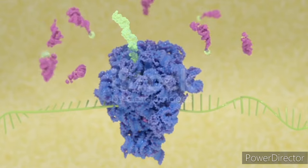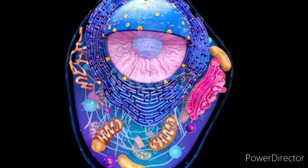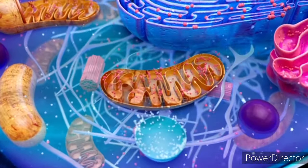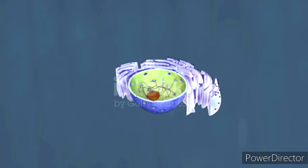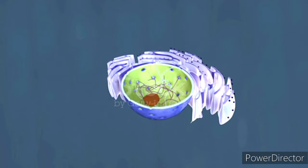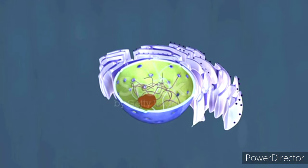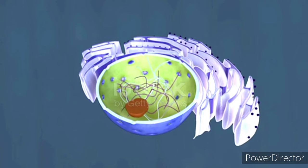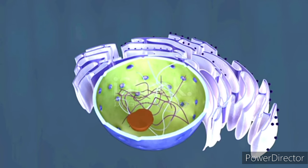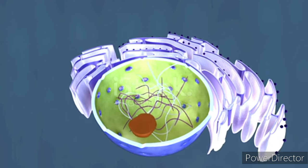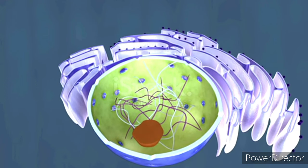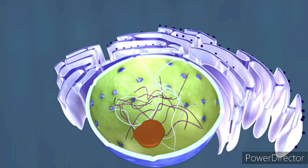Location: Ribosomes can be found in two main cellular locations — free-floating in the cytoplasm or attached to the rough endoplasmic reticulum (ER). Ribosomes attached to the endoplasmic reticulum are involved in synthesizing proteins that are either secreted from the cell or incorporated into the cell membrane.